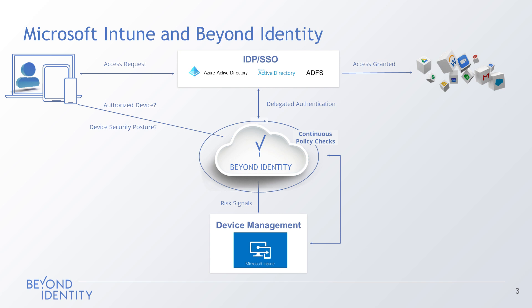Beyond Identity validates the user identity leveraging the device biometric, issues a public key from our cloud, signs that against the private key on the device, validating that the user has been bound to that device, and that the device meets security posture — which includes the ability to verify if Microsoft Intune is present on that device and properly configured before granting access.